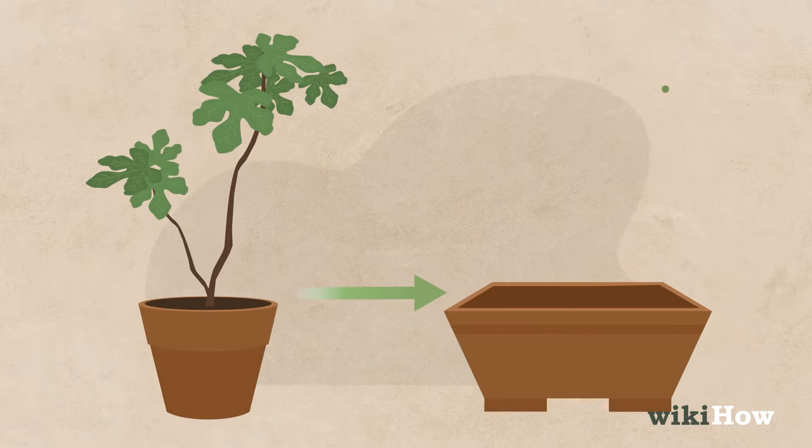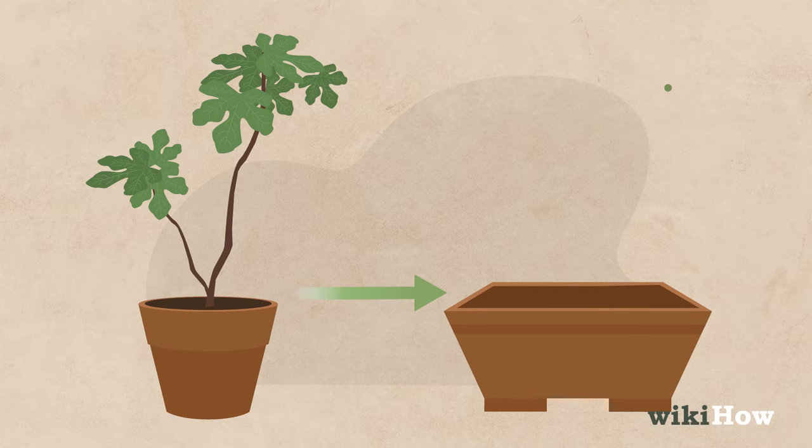Get a pot for your bonsai that's small enough to contain the juvenile plant without giving it too much space to grow.